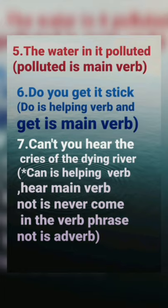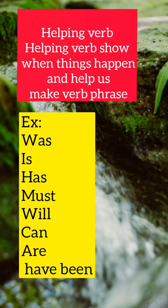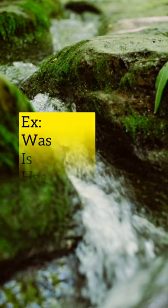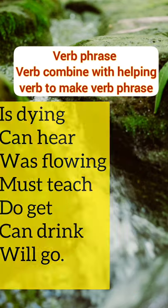Seventh: 'Can't you hear the cries of the dying river?' 'Can' is the helping word, 'hear' is the main word. Note: 'not' is an adverb and does not come in the verb phrase. So 'can hear' is the verb phrase. The two words together express an action or state of being. Helping verbs show when things happen — examples: was, is, has, must, will, can, have, been. Verb phrase combines helping verb with main verb to express: is dying, can hear, was flowing, must make, do get, can drink, will go. Thank you.